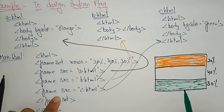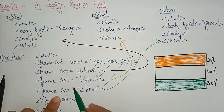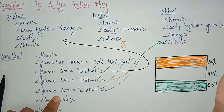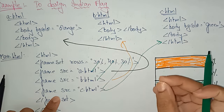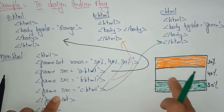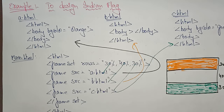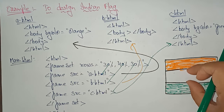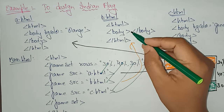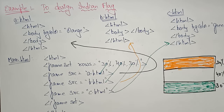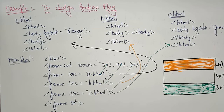To display the Ashoka Chakra in the middle frame, download the picture, save it in the HTML folder, and use an image tag — not an anchor tag, since anchor tags navigate to another page. Use the image tag with the picture's filename and align it to the center inside the body tag. That's how you divide pages into frames using rows and columns.